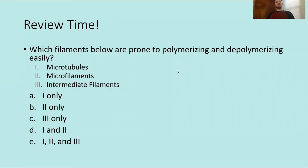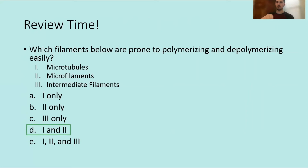Review question two: Which filaments are prone to polymerizing and depolymerizing easily? The correct answer is D — microtubules and microfilaments. Both polymerize from monomers. Intermediate filaments, by contrast, start with proteins folded into alpha helices and polymerize into stable structures that are not prone to polymerizing and depolymerizing. So the correct answer is one and two — microtubules and microfilaments.